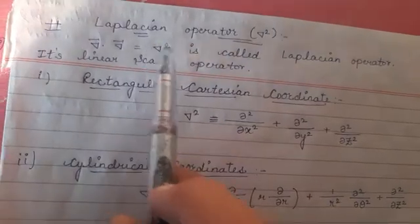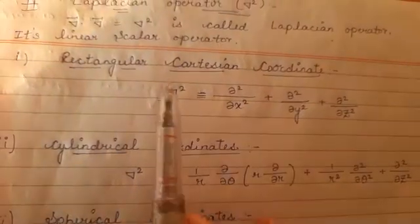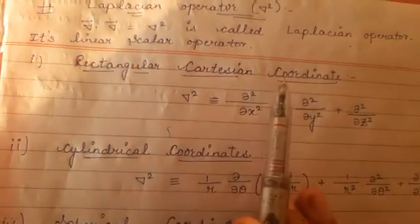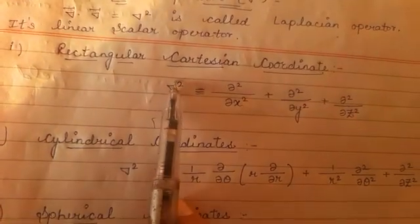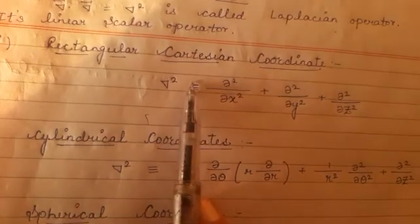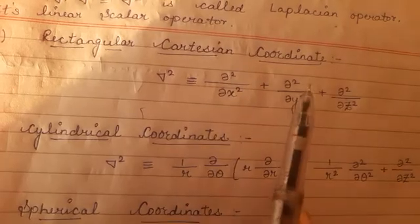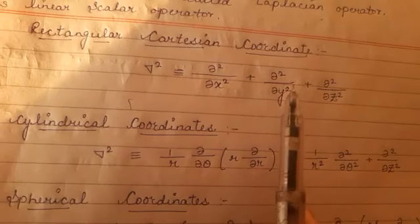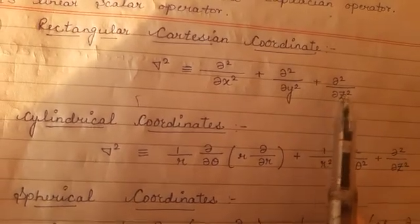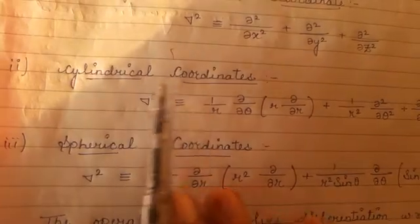The Laplacian operator is a linear scalar operator. The expression in rectangular Cartesian coordinates is del square, which represents second-order partial derivatives of a 3D system: curly square divided by curly x square, plus curly square divided by curly y square, plus curly square divided by curly z square.